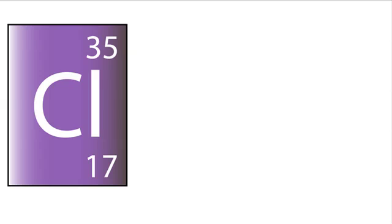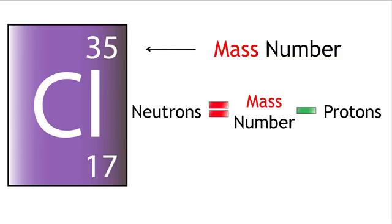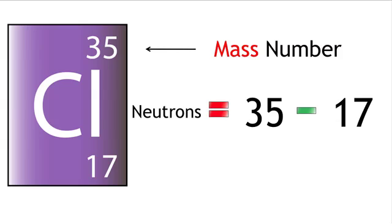So chlorine-35 has a mass of 35. Neutrons equals mass number minus protons. 35 minus 17. 18 neutrons.